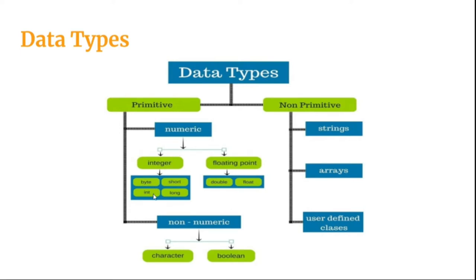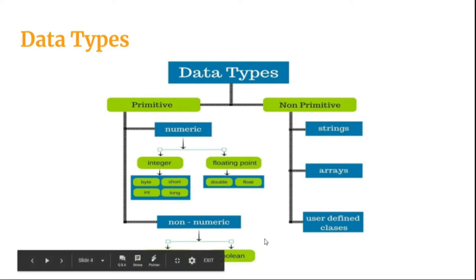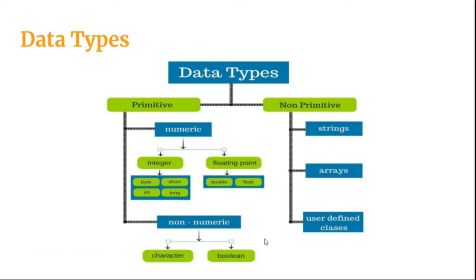In integer, there are four data types: byte, short, int and long. And in floating point, we have got double and float. In non-numeric, we have got two data types, character and boolean.